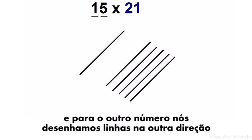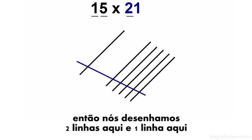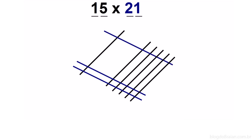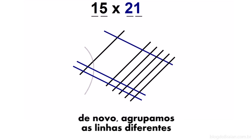And the other number, we draw lines in the other direction. So we draw two lines here and one line here. We will again group the different lines.